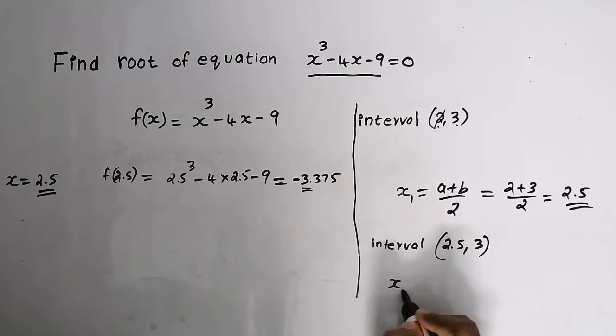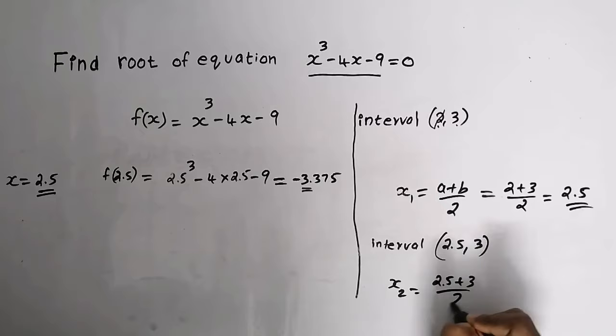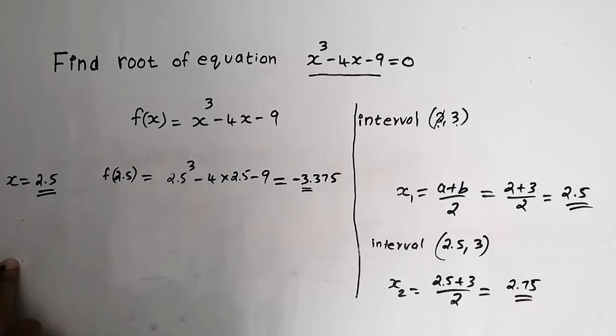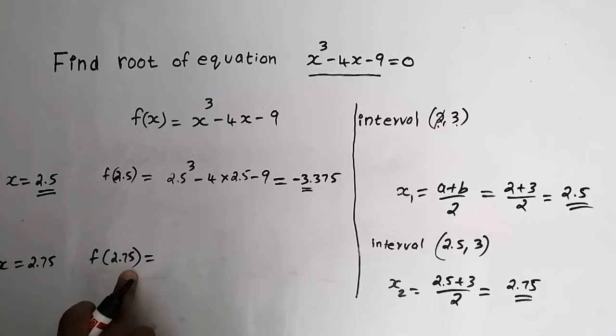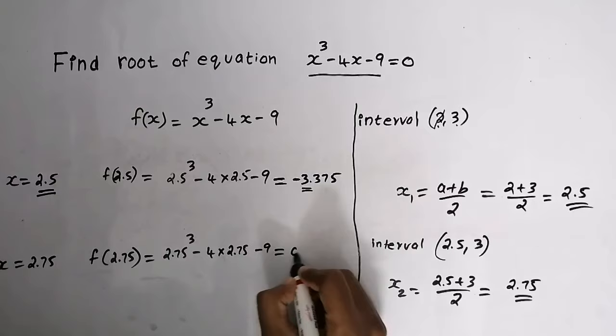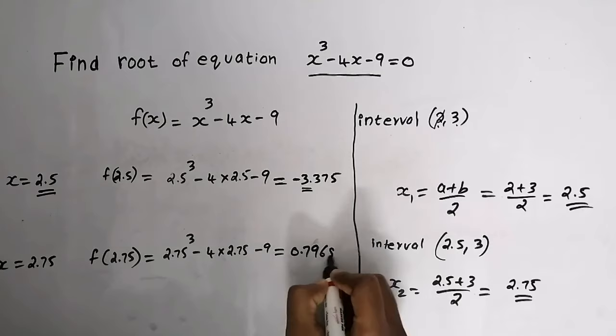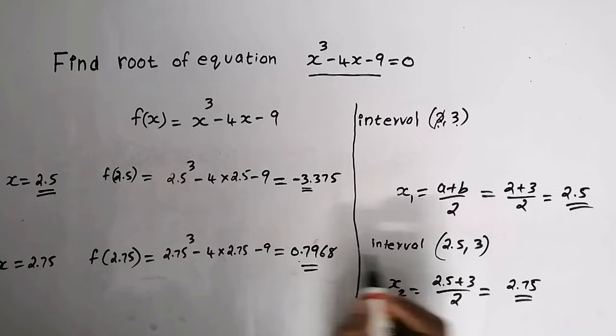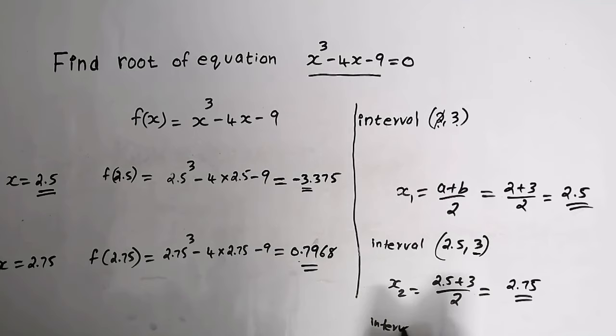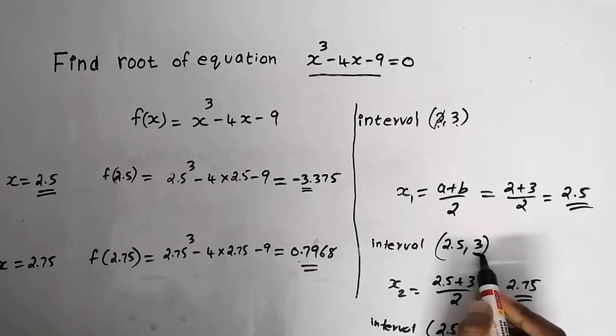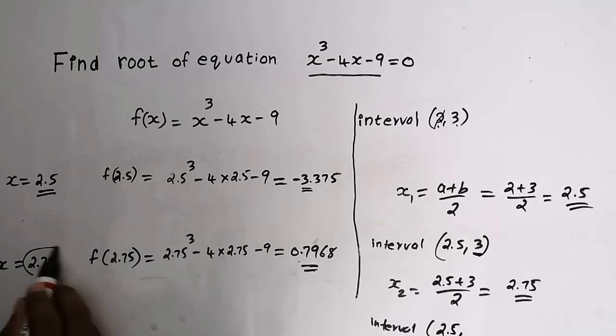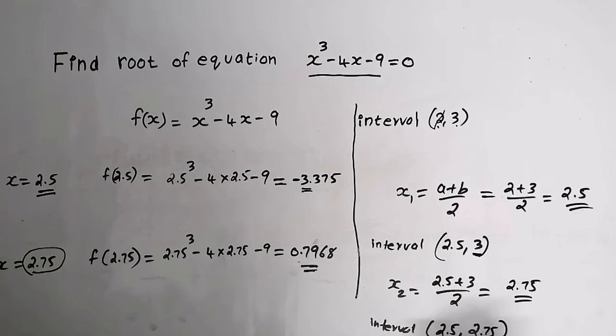Now do the second iteration. x2 = (a + b) / 2 = (2.5 + 3) / 2 = 2.75. Now f(2.75) is a positive value. If it is a positive value, we replace interval b. So we replace b with 2.75, giving new interval [2.5, 2.75].